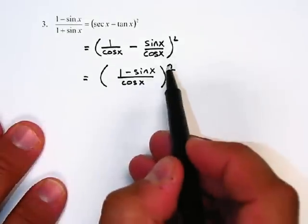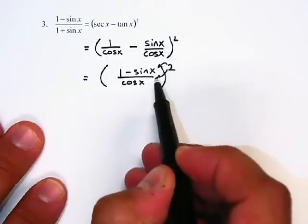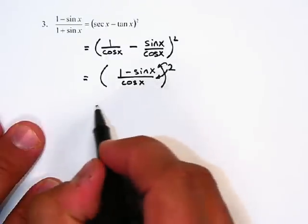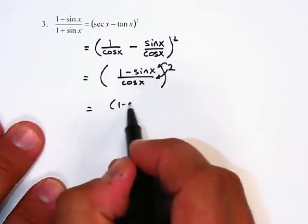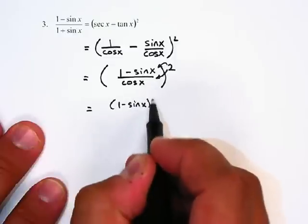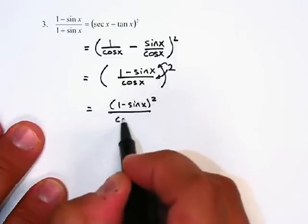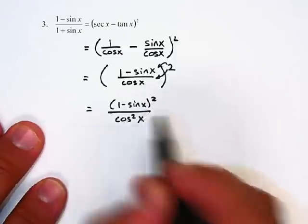Now I can square the top and square the bottom — I can distribute over division — and that gives me one minus sine of x, quantity squared, over cosine squared x.